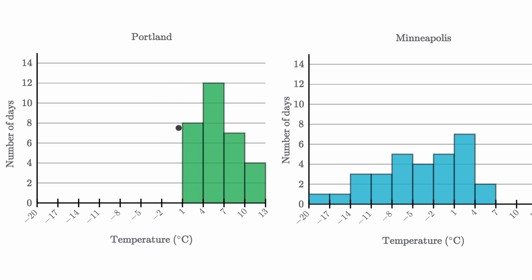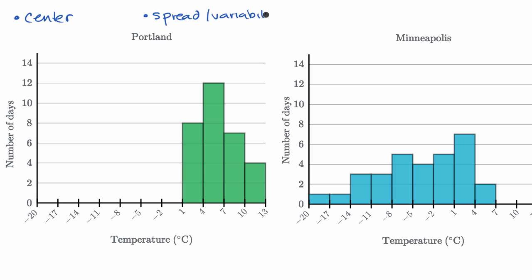This is the distribution for Portland. For example, they get eight days between one and four degrees Celsius, 12 days between four and seven degrees Celsius, and so forth. And then this is the distribution for Minneapolis.